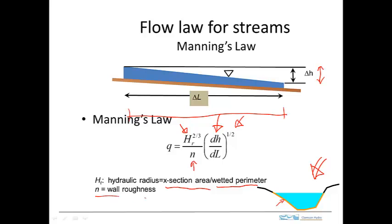N is the wall roughness, and it's a dimensionless parameter. If we've measured the depth profile for doing the stream gauge, we can calculate the cross-sectional area and the wetted perimeter from that information.